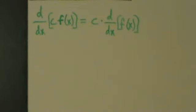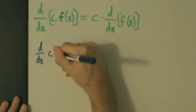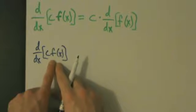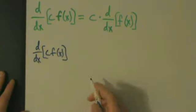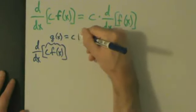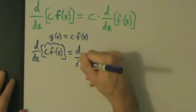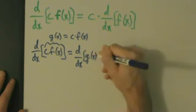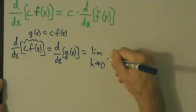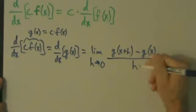But let's see it in detail. So let's say we have d/dx of c·f(x). We can think of c times f(x) as just one function — let's call this g(x). So g(x) is c times f(x). So this is going to be the derivative of g(x). And what's the derivative of g(x)? That's going to be the limit as h goes to 0 of g(x+h) minus g(x), all over h.